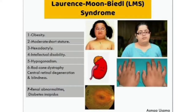So once again, the features of LMS — Laurence-Moon-Biedl syndrome — are: obesity, hypogonadism, short stature, polydactyly, and syndactyly. Looking at this picture, you can see the girl is obese, the gonads are hypoplastic, and the fingers show an increased number of digits.